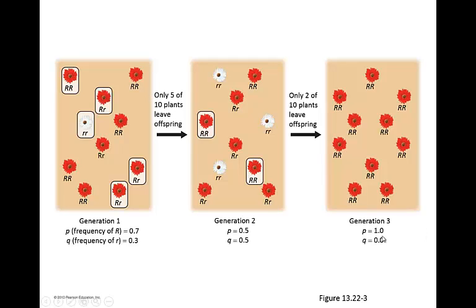These happen to be the ones that were able to leave their offspring in this third generation. P would be 1.0 and Q would be 0.0. So just simply by chance, due to this small population size, these were the only ones that happened to be able to reproduce and leave their offspring. This allele then is the one that's going to be prevalent in that population.